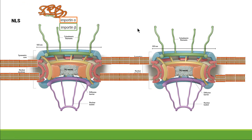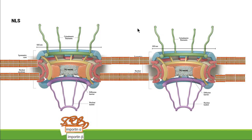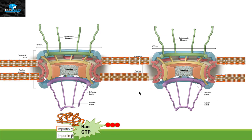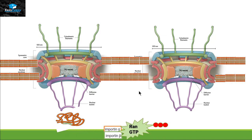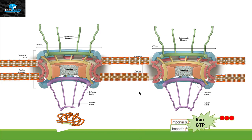The cargo protein attaches itself to the importin alpha domain, and importin beta takes this protein with the receptor into the nucleus. Inside the nucleus, we need to detach this protein from importin. To detach the cargo protein from importin, we need a RAN-GTP molecule. RAN-GTP is guanosine triphosphate, so it has three phosphate groups. RAN-GTP attaches itself to importin and triggers a conformational change, allowing importin to release the cargo protein. Importin then needs to get back into the cytoplasm to bring the next protein inside the nucleus, and it exits the nucleus carrying RAN-GTP.